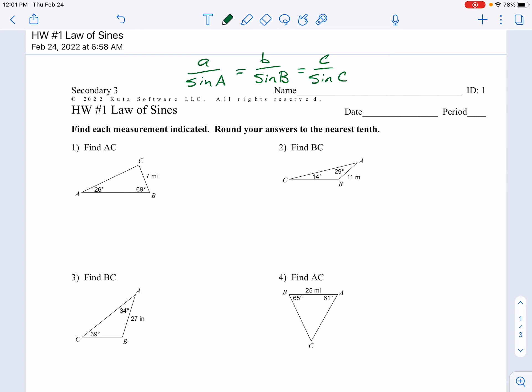Make sure that little a is always located across from capital A. So on question number one, little a is 7, capital A is 26. That's the fraction we're going to start with: 7 divided by the sine of 26. Always match up the side across from the angle to make your fractions.